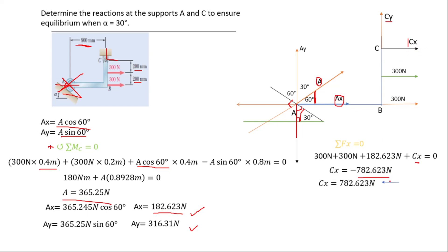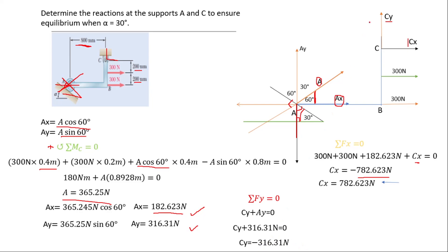The negative Cx just shows that it opposes the assumed direction. Now for Cy, we take the sum of forces in the y-component equal to zero: Cy + Ay = 0. Substituting Ay = 316.31 newtons, we get Cy + 316.31 = 0, giving Cy = −316.31 newtons. The negative sign again indicates Cy acts in the opposite direction to what was assumed.